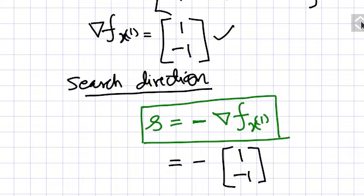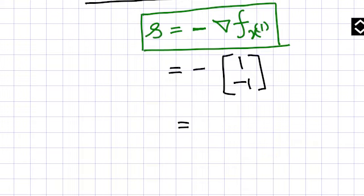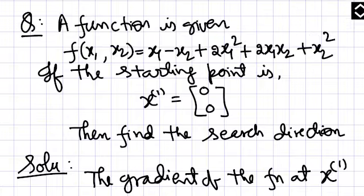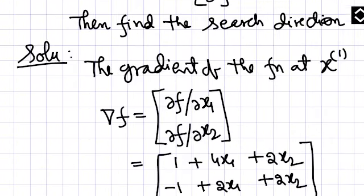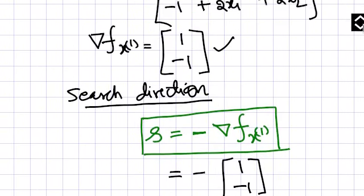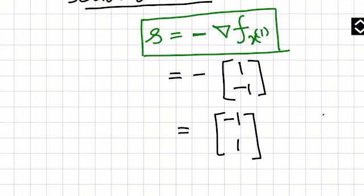So what you will get? The direction will be [-1, 1]. So in the opposite direction of the gradient, we go for searching the minimum.